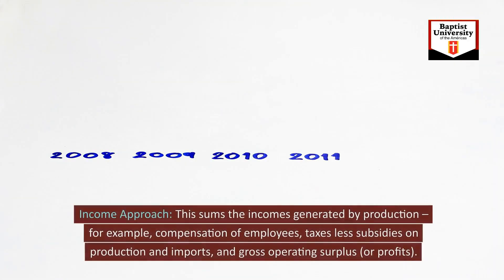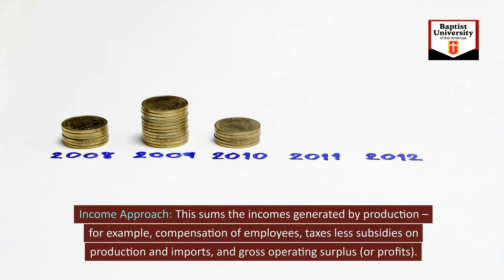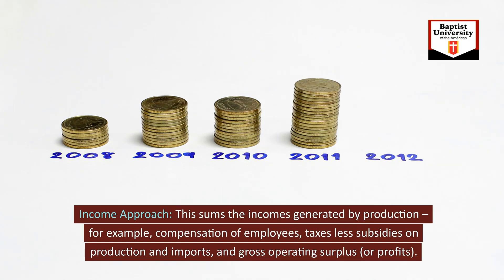The second is the income approach, which sums the incomes generated by production — for example, compensation of employees, taxes less subsidies on production and imports, and gross operating surplus or profits.